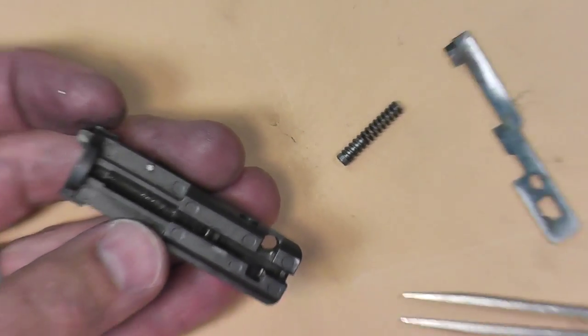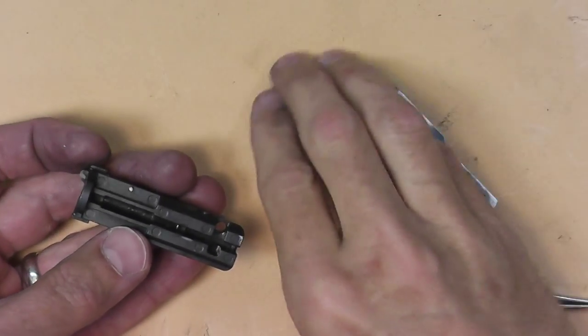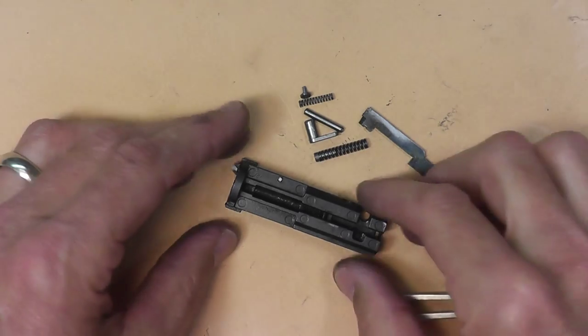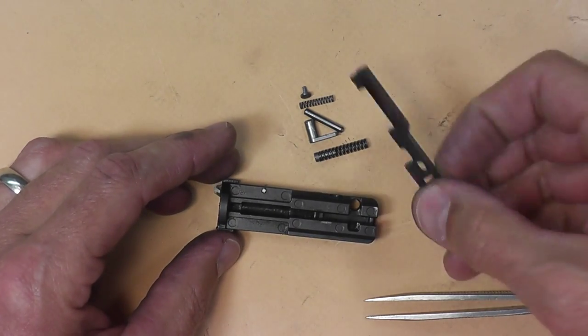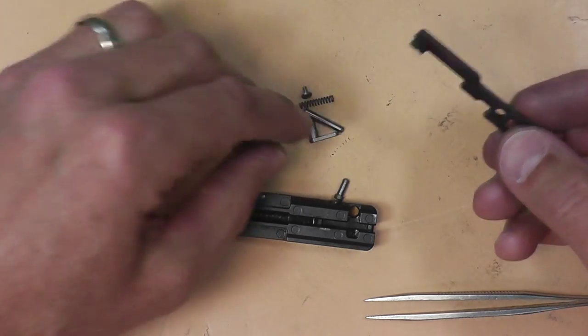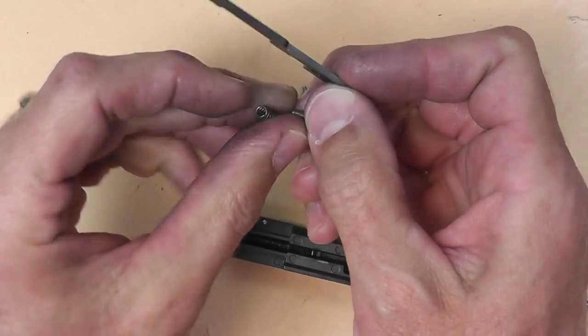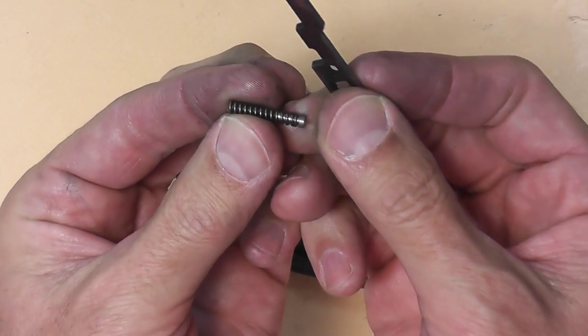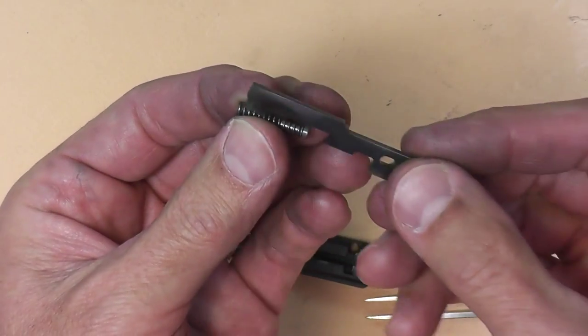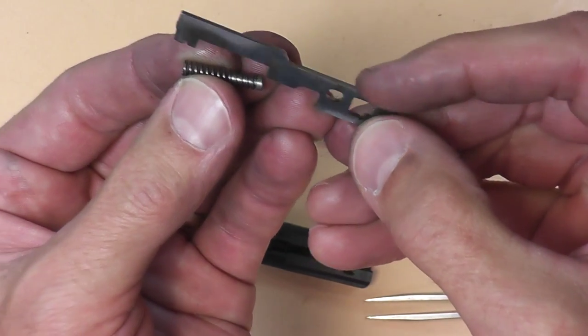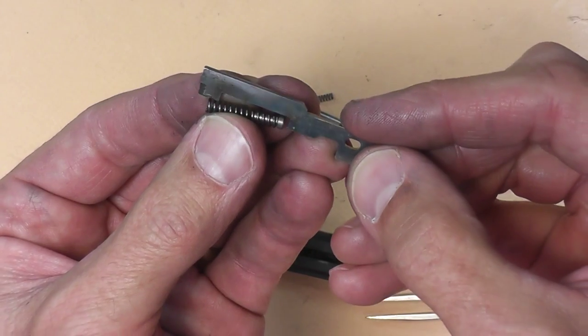Putting it back together is basically the reverse order. I find putting the firing pin back in and the spring is best if you do it outside of the bolt. So we'll take this little pin and we'll put it back in its spot. I take the little pin. This is the back where these little squares are cut out. This is the back of the firing pin. So put it here.